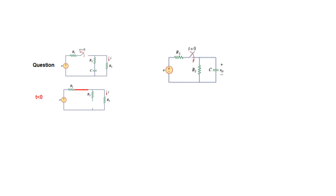The capacitor behaves like an open circuit for DC if voltage is applied for a long time — we're not talking about the transient period, but after it is fully charged. So in the second circuit, before t = 0 the switch is open, and the circuit will look like an open circuit before t = 0.